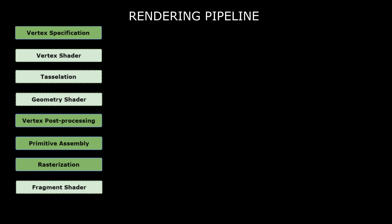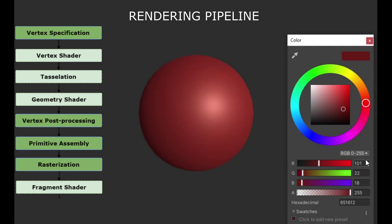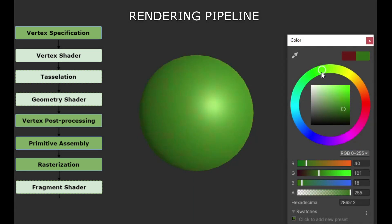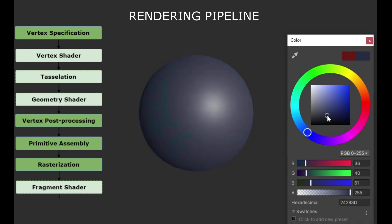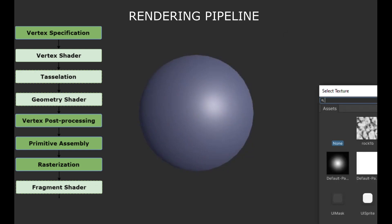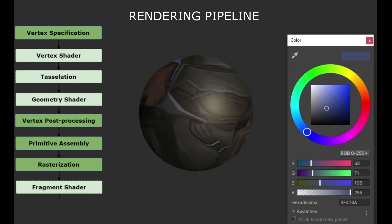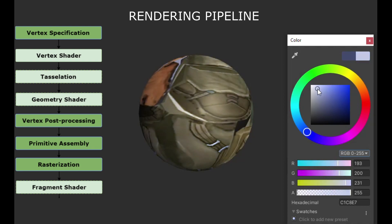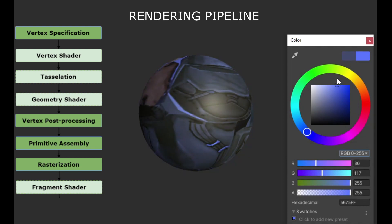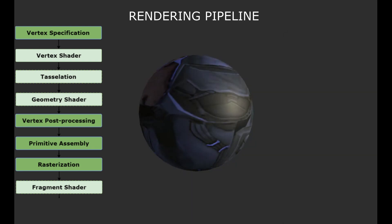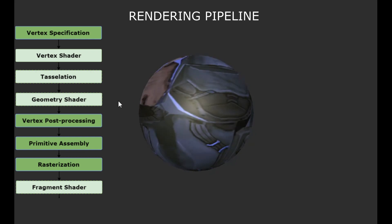The next part is the fragment shader, also called pixel shader. This user-written program calculates the color of each fragment the user sees on the screen. The fragment shader runs for each fragment in the geometry, and its job is to determine the final color of each fragment. The more fragments a geometry has — meaning the bigger it is on the screen — the more expensive it will be. Effects like lighting are calculated in here.